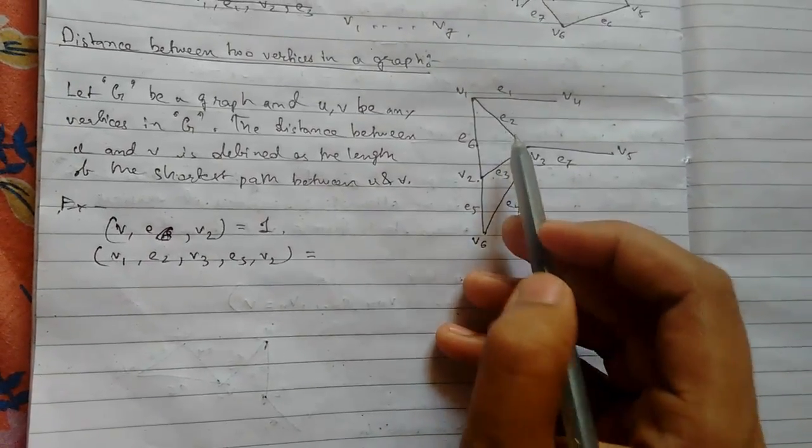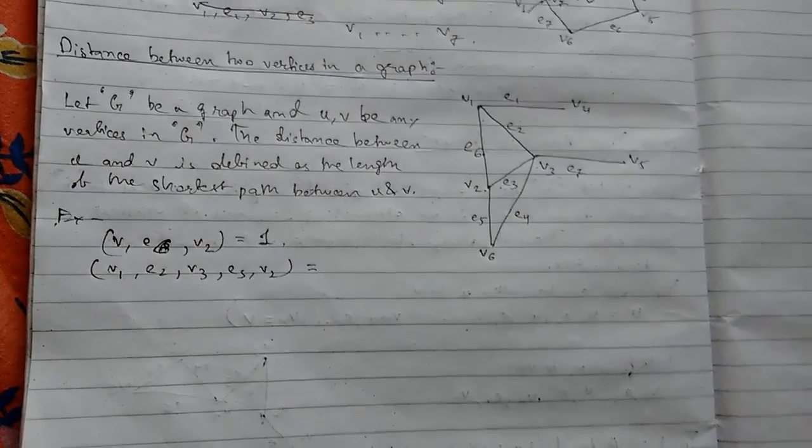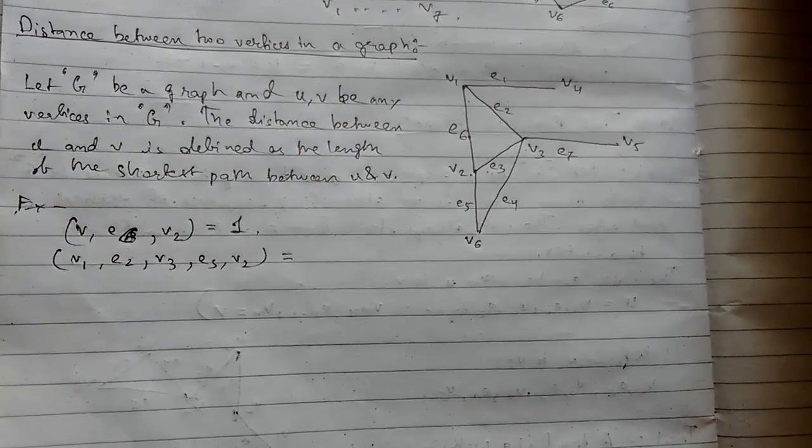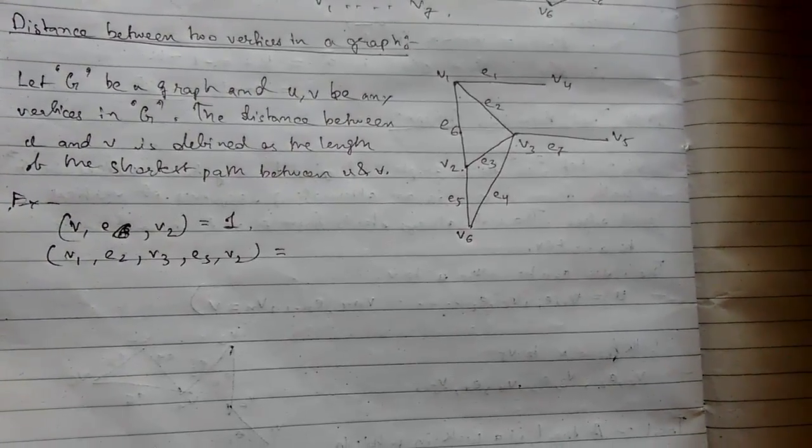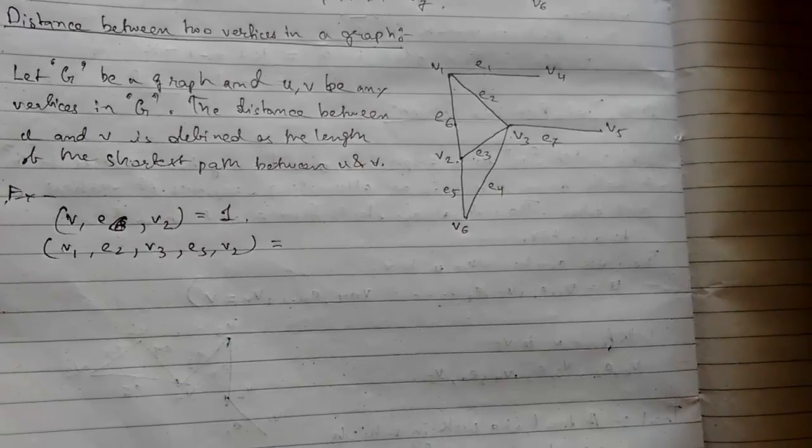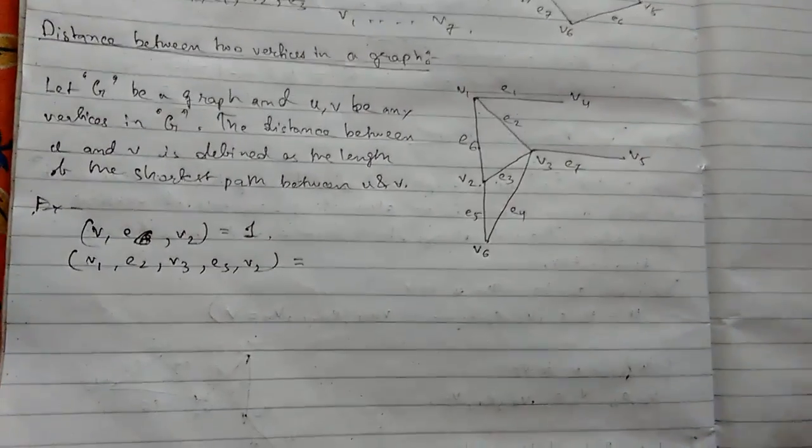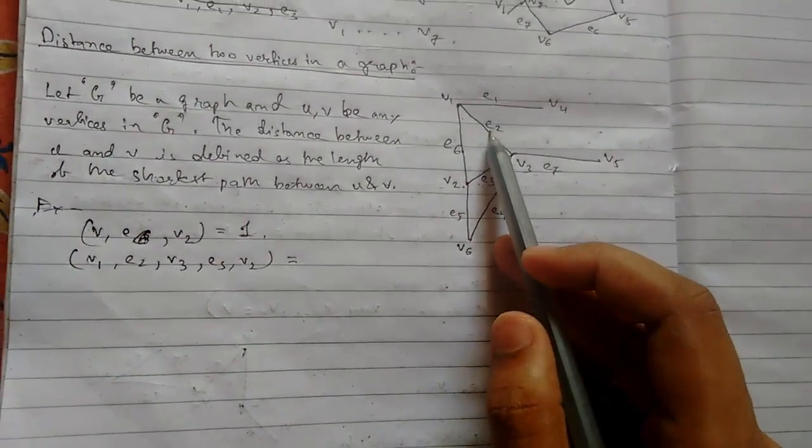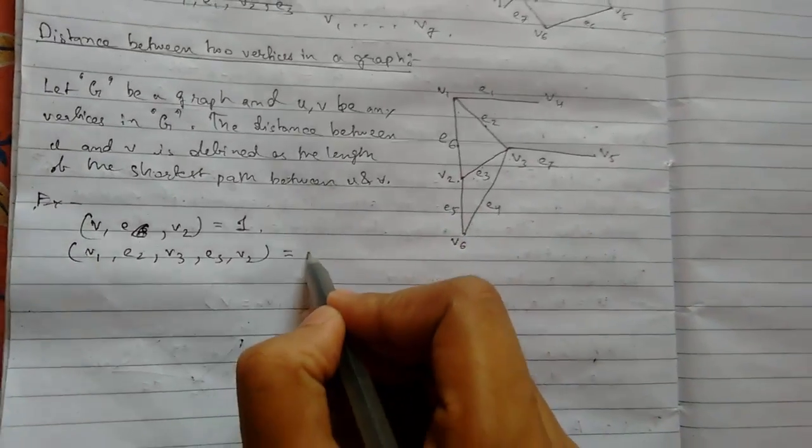To cover a path, we need no repetition of vertices. We should not repeat the vertices. So it will be 1 and 2, so it will be 2.